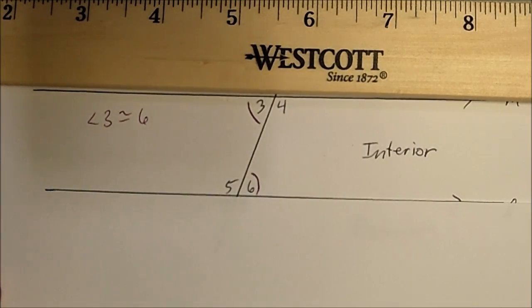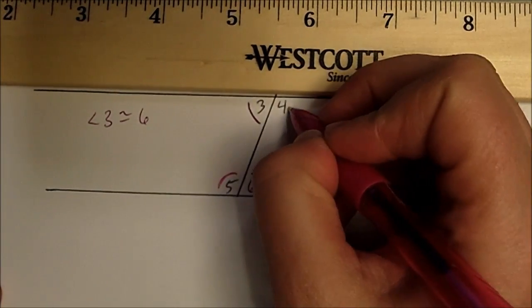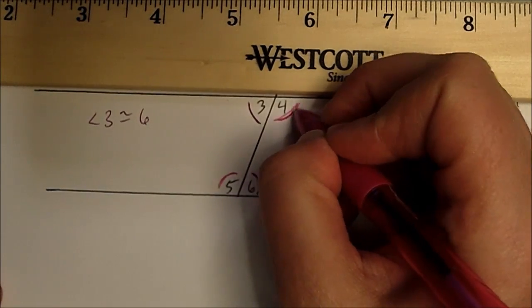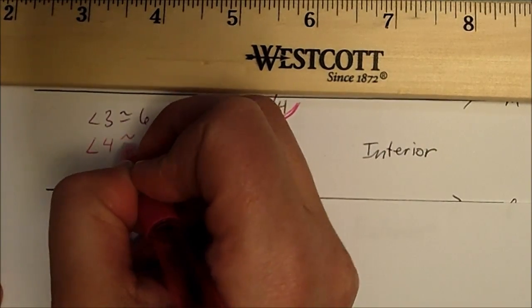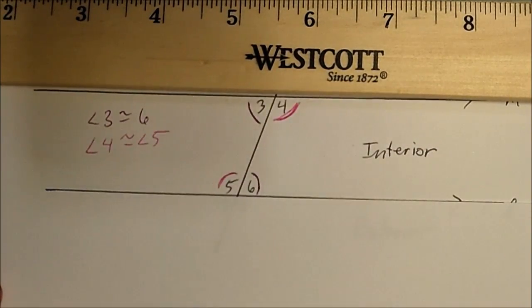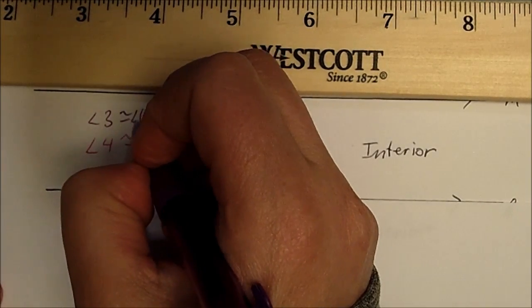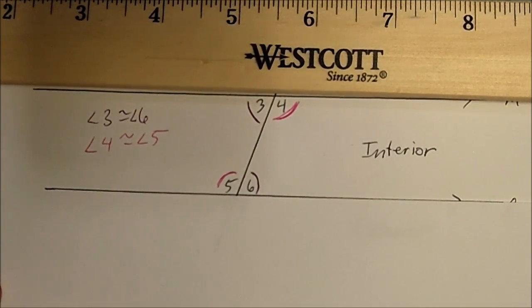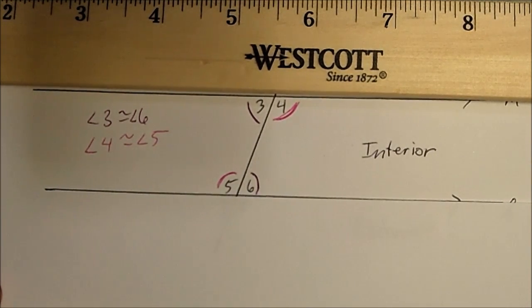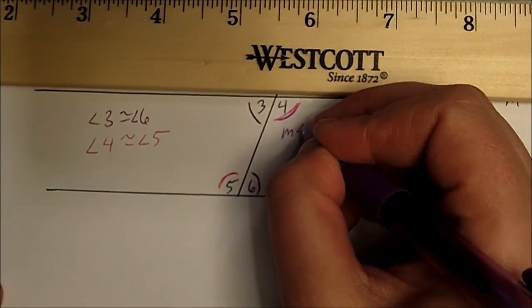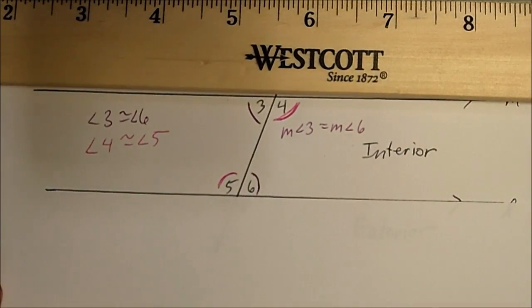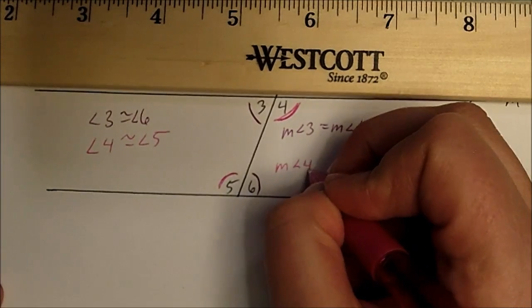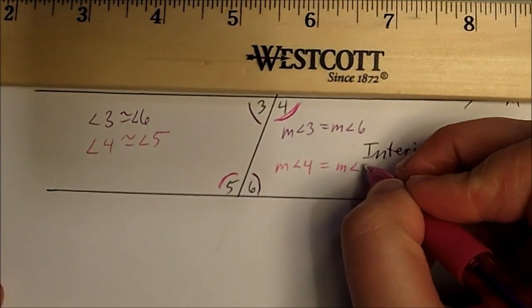We also know that angles four and five are alternate interior angles, so angle four is congruent to angle five. What does that mean? If they're congruent, their shape is the same. If their shape is the same, they have the same measure. So the measure of angle three equals the measure of angle six, and the measure of angle four equals the measure of angle five.